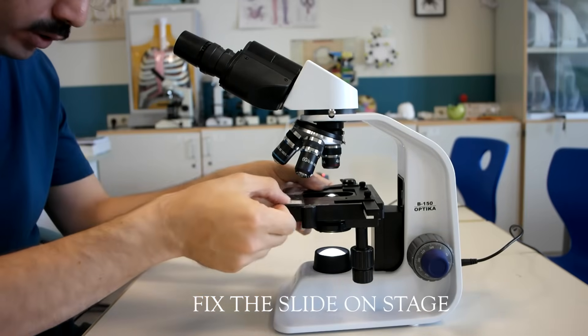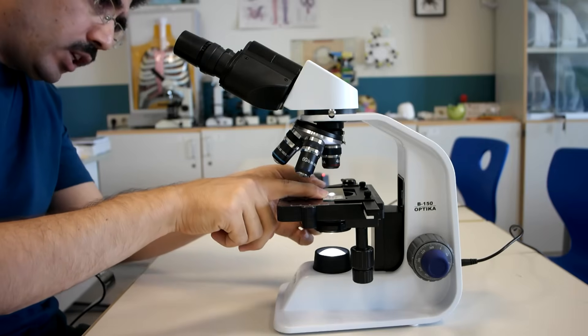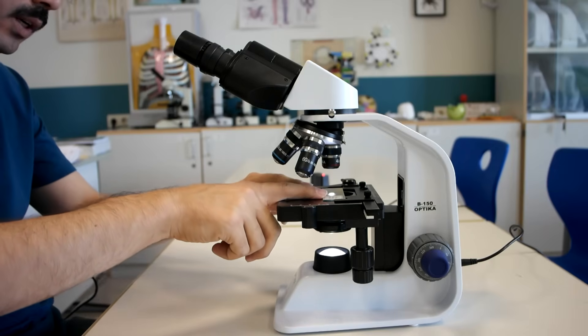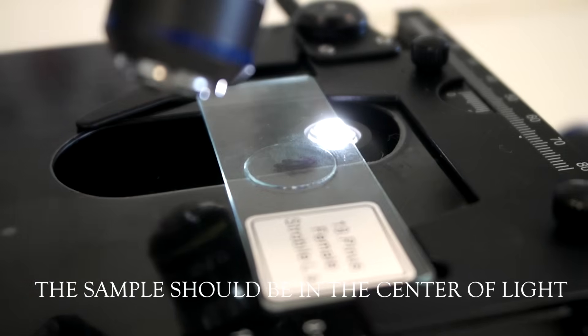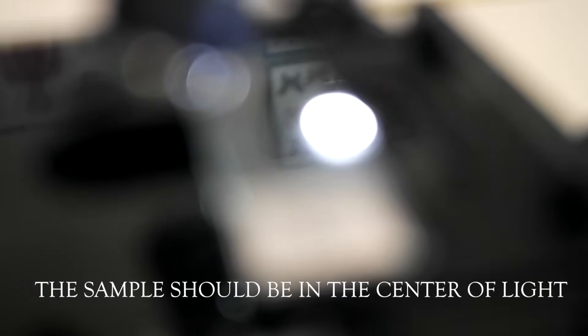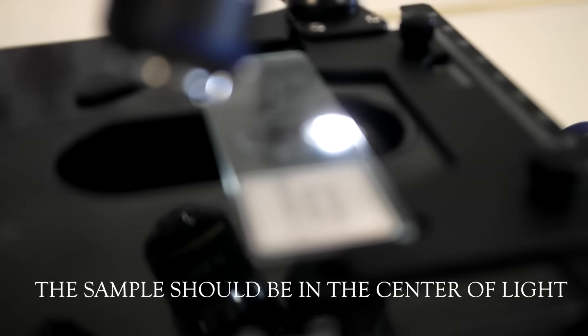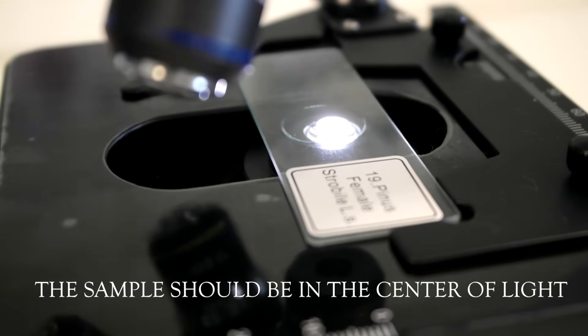And then we fix the slide onto the stage with the stage clips. First, make sure the sample is right in the center of light before you start looking through the eyepiece lens. Make sure it's right on top of light.